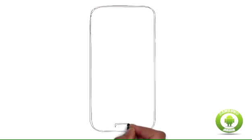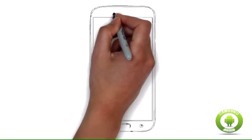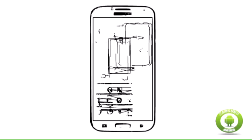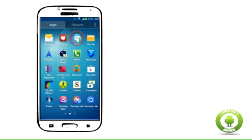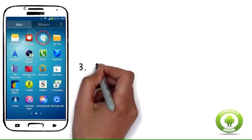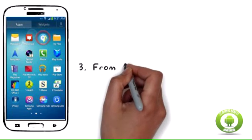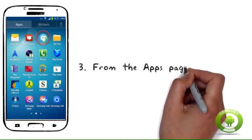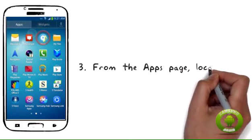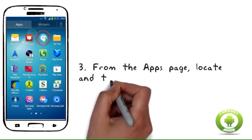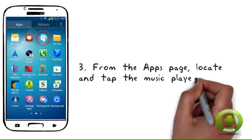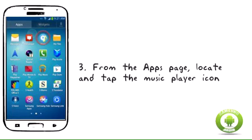Step 3. From the Apps page, locate and tap the Music Player icon. By default, Samsung Galaxy S4 icons are arranged alphabetically, so locate the app among the ones that start with the letter M. Tap on the Music icon once you find it.